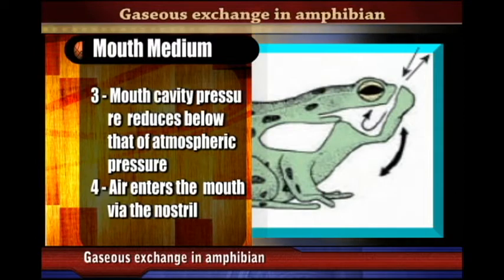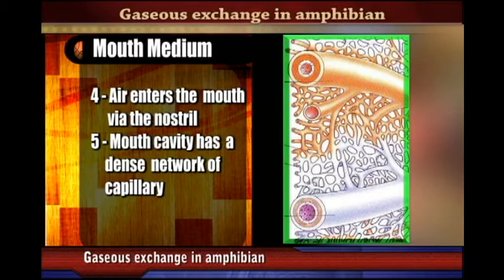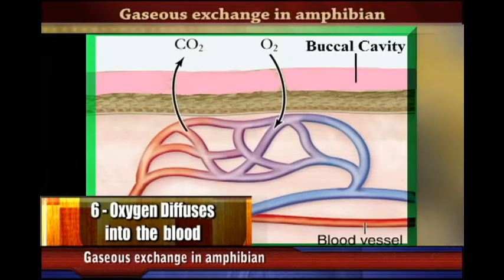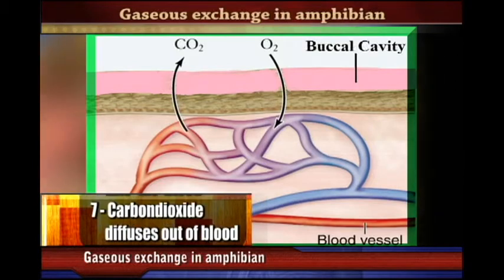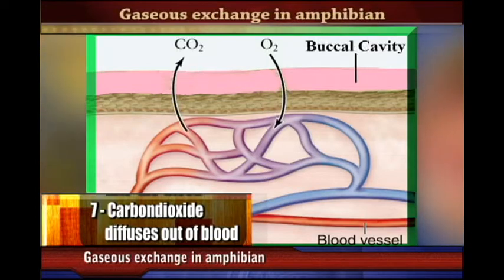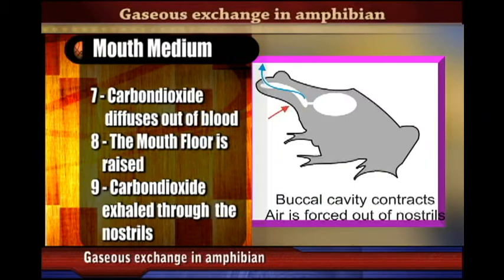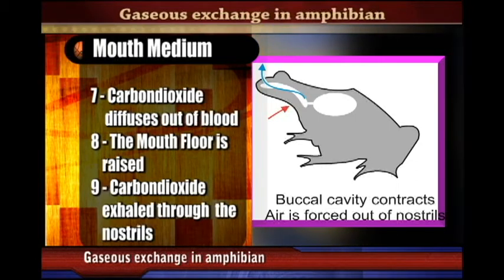The mouth cavity of the frog has a dense network of capillaries. Oxygen in the mouth cavity diffuses into the blood of these capillaries, and carbon dioxide diffuses out of the blood into the buccal cavity. When the floor of the mouth is raised, carbon dioxide is exhaled through the nostrils.